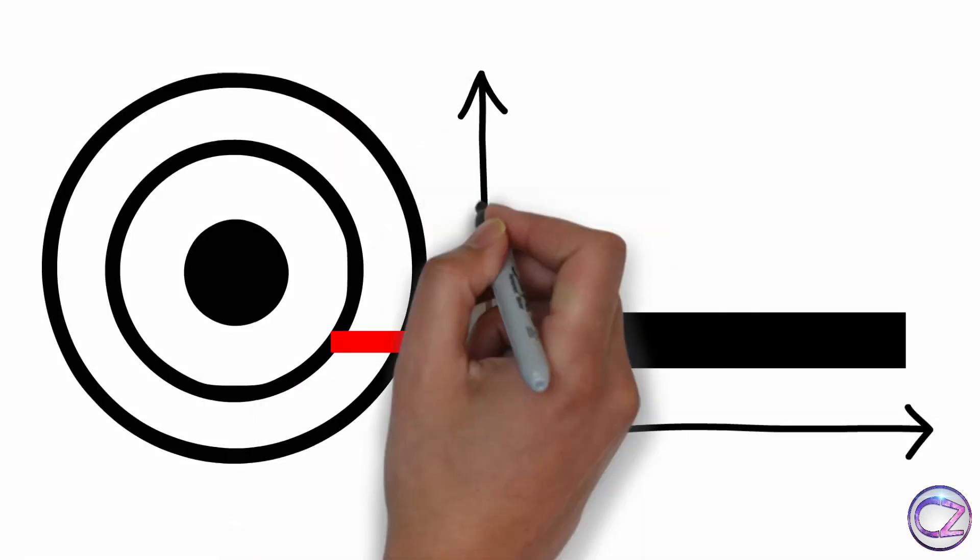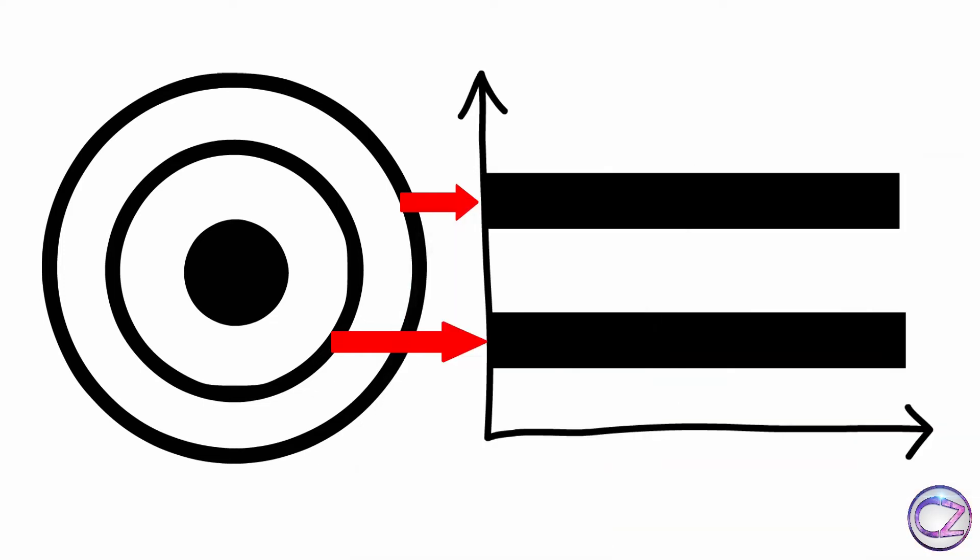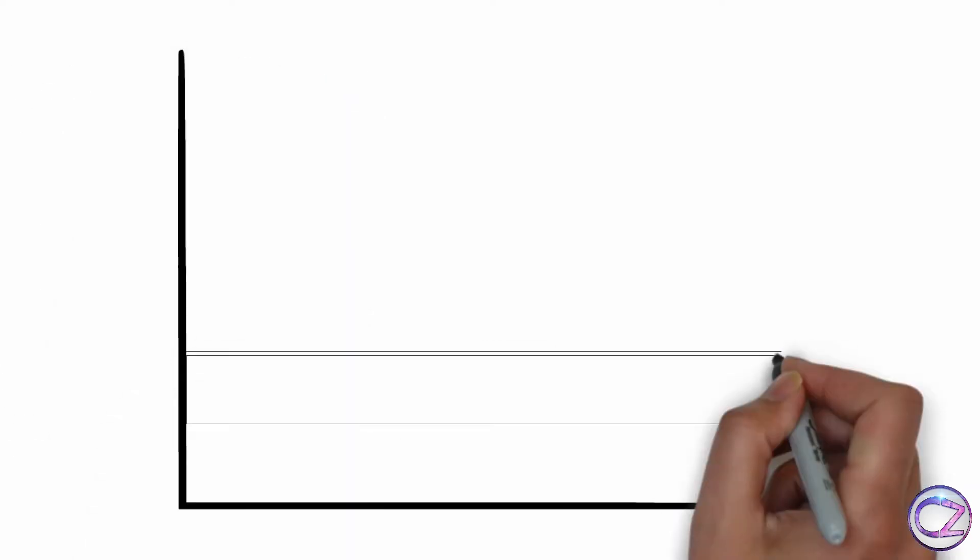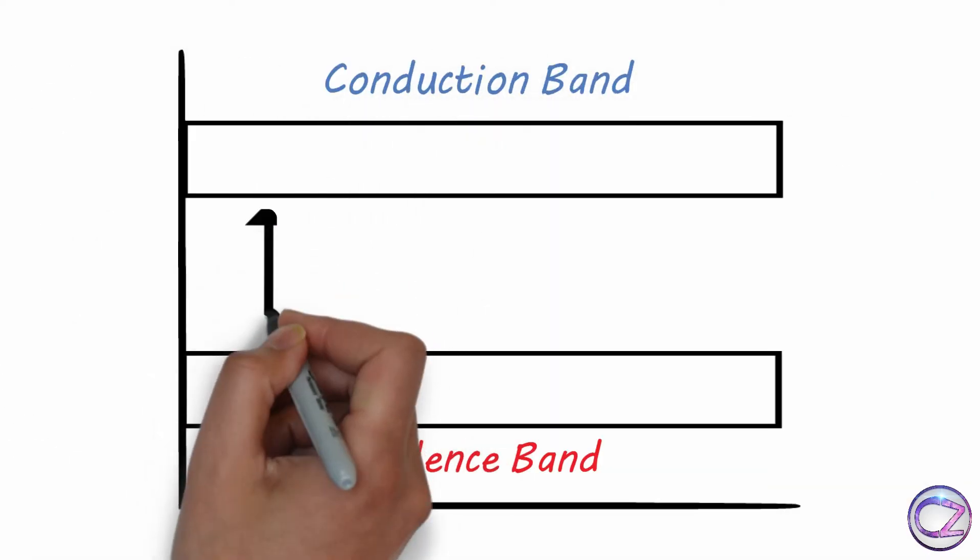Now focus on this atom. This orbit is the first energy band and this is the second one. There are many kinds of energy bands, three of which are main. These are valence band, conduction band, and forbidden energy gap.